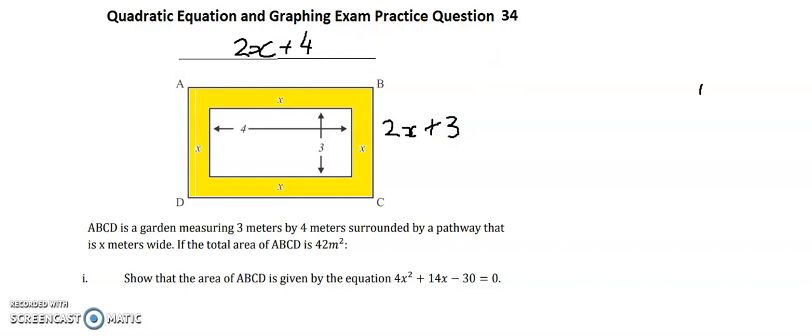So if I think about the area, we know area must be length, so 2x plus 4, times width, 2x plus 3, and we know it's equal to the area which is 42 meters squared.